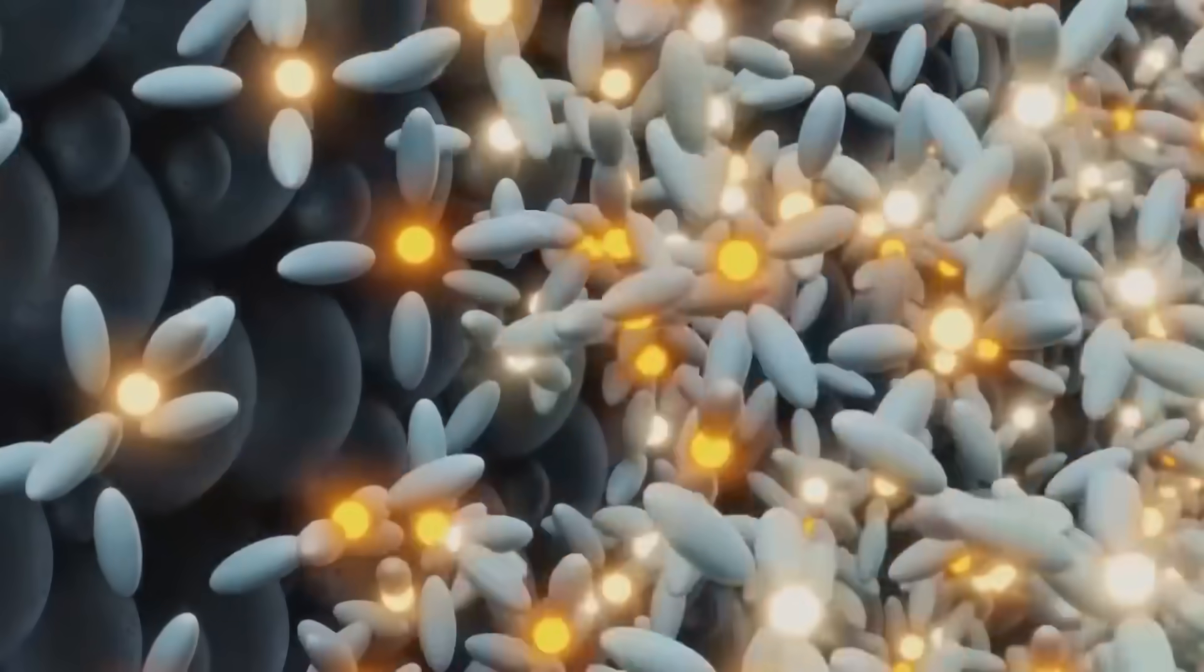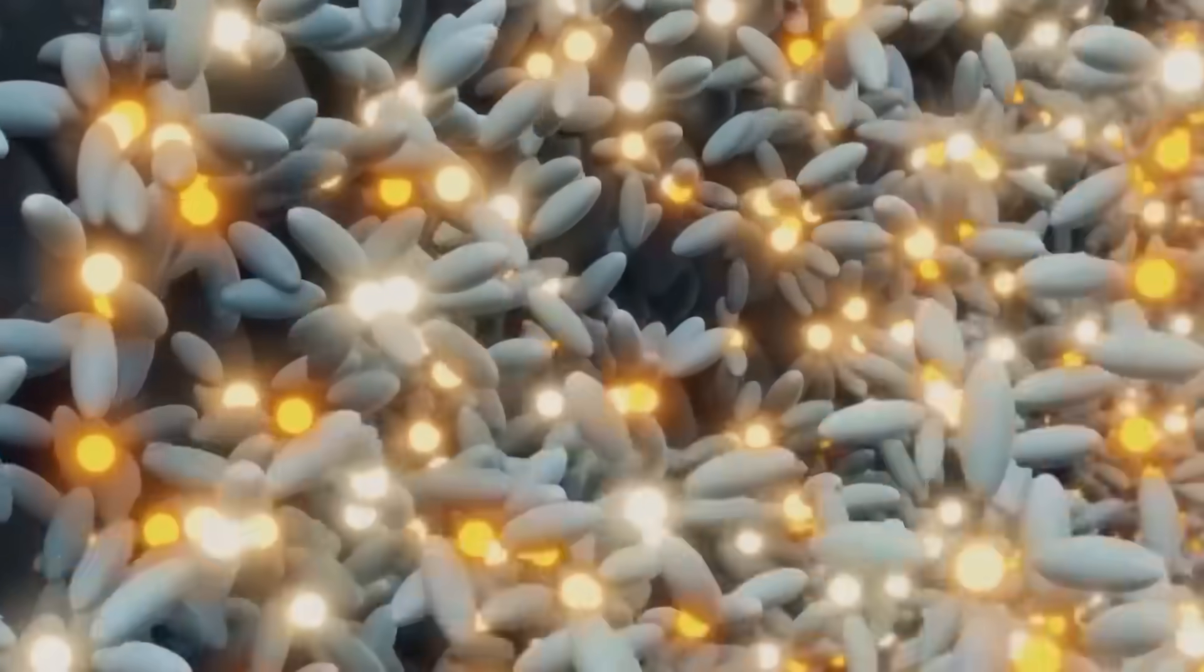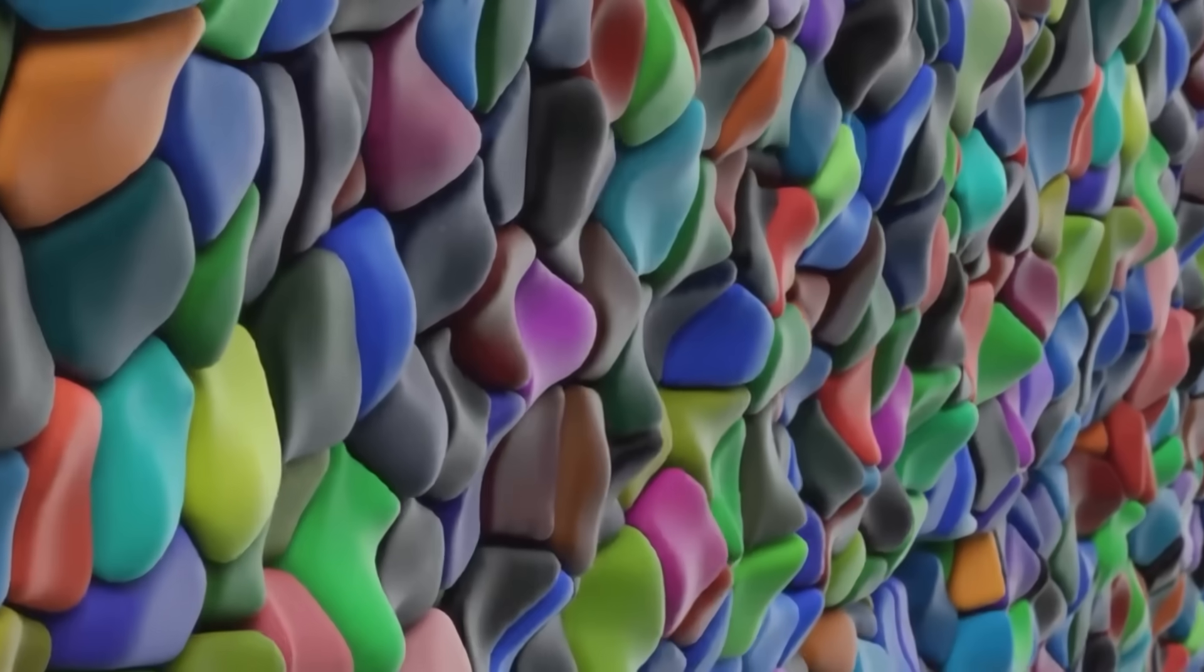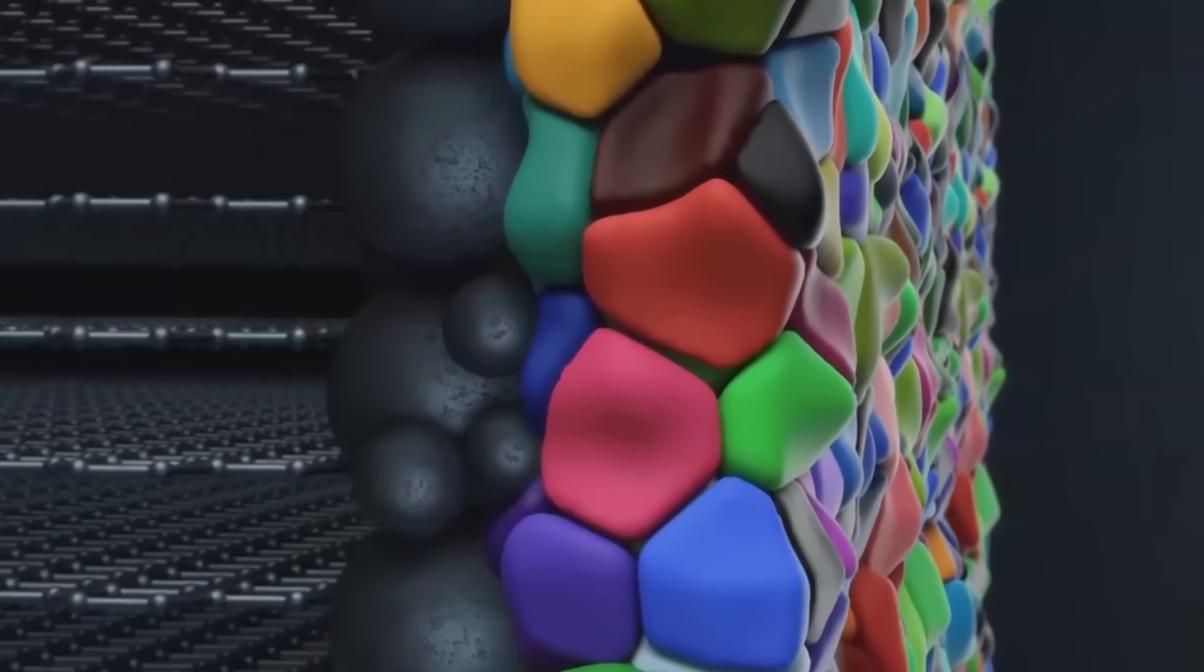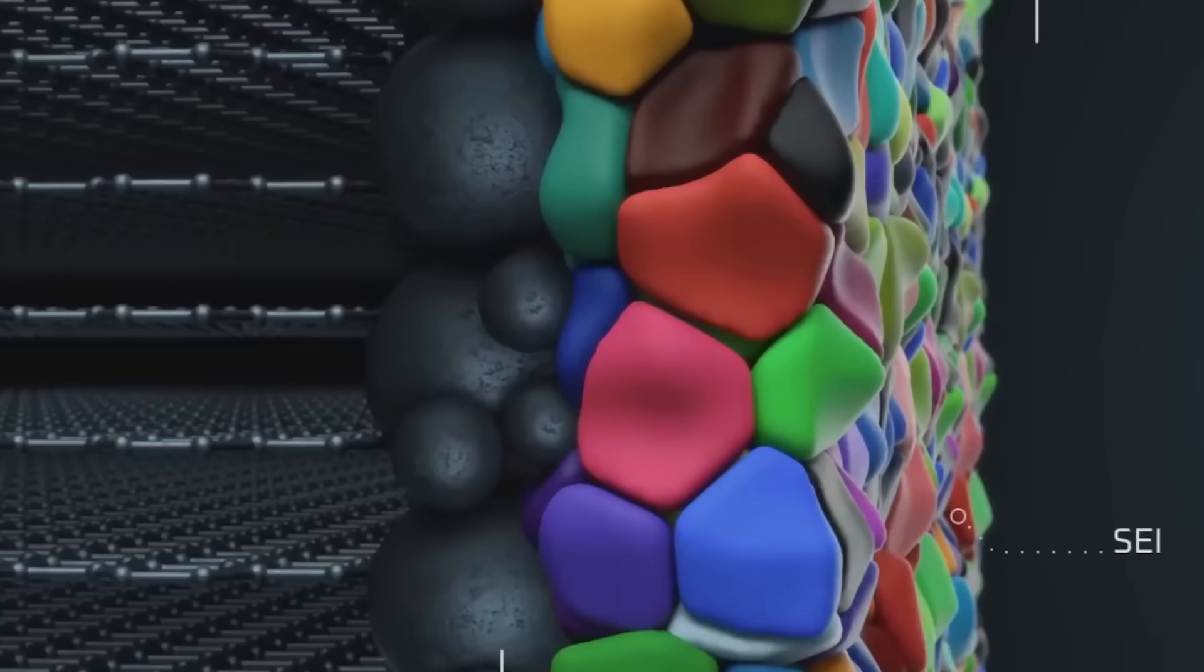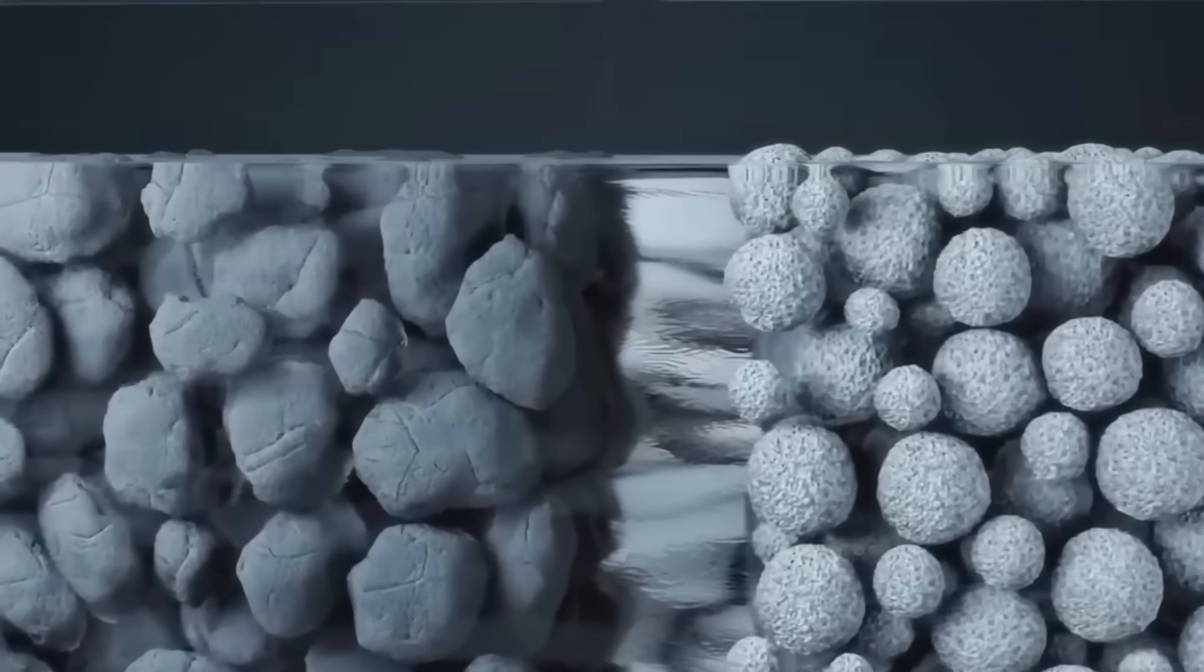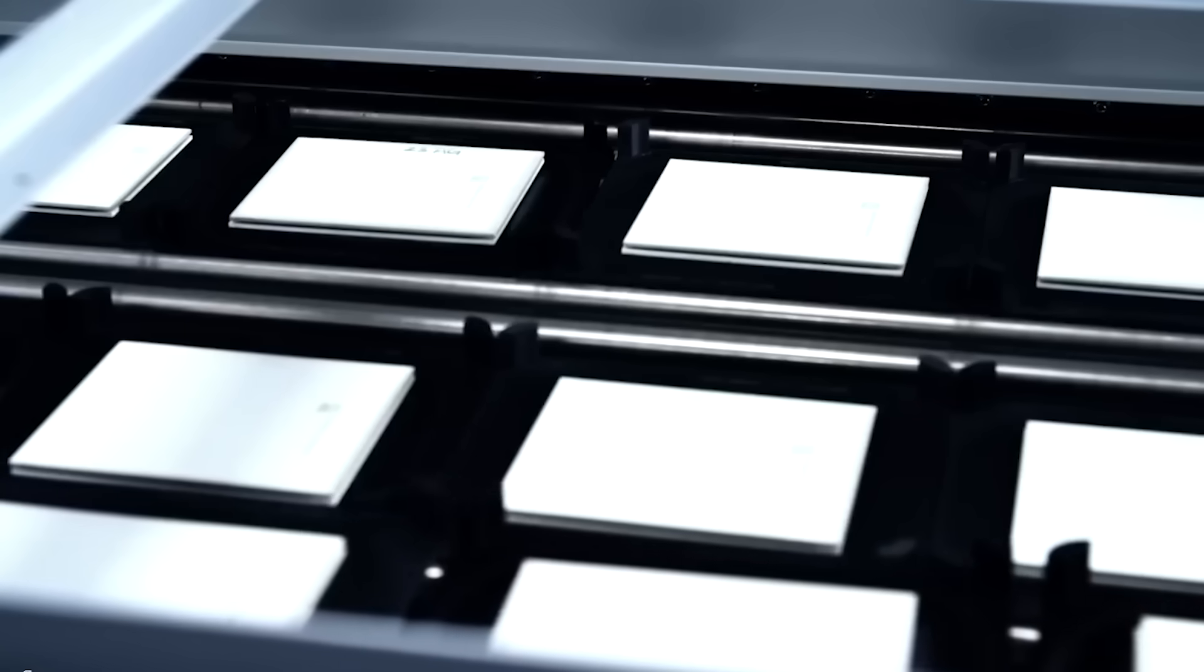Another quiet enemy is the Solid Electrolyte Interphase, or SEI. It builds up on electrode surfaces, consumes active material, and slows lithium-ion flow. Capacity drops and resistance rises.